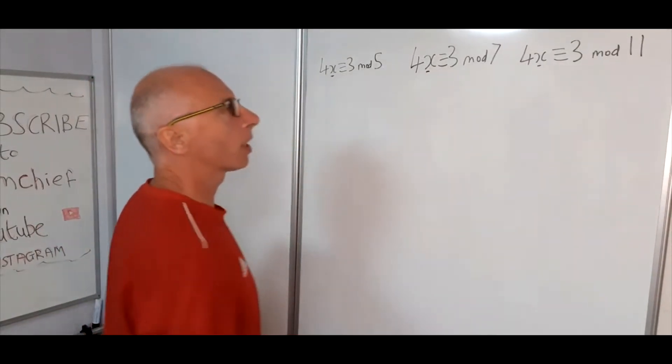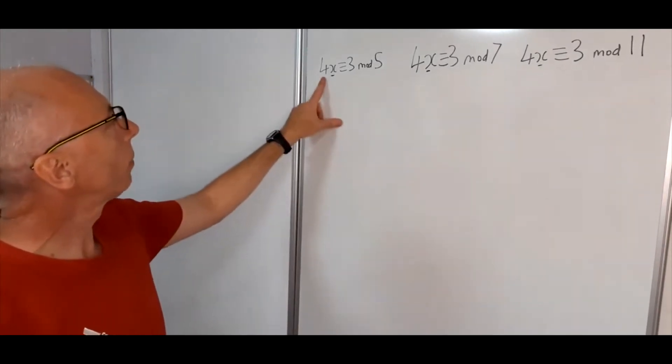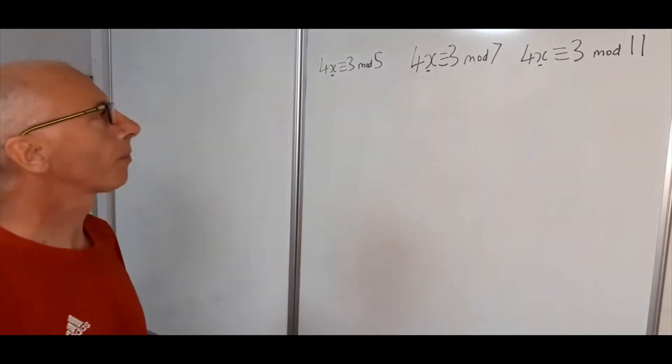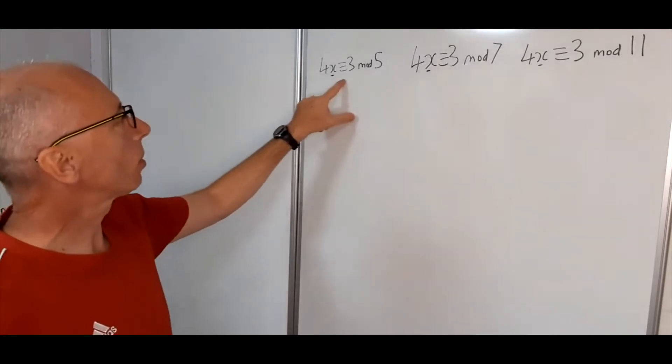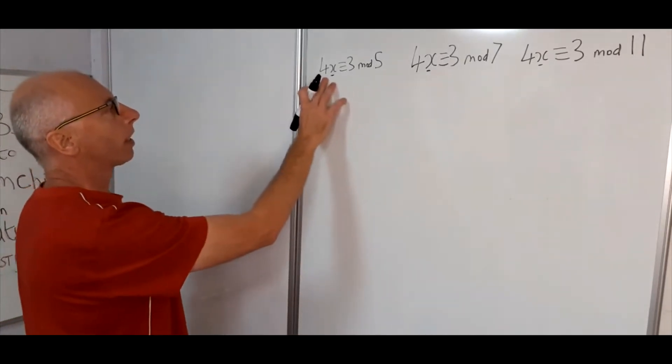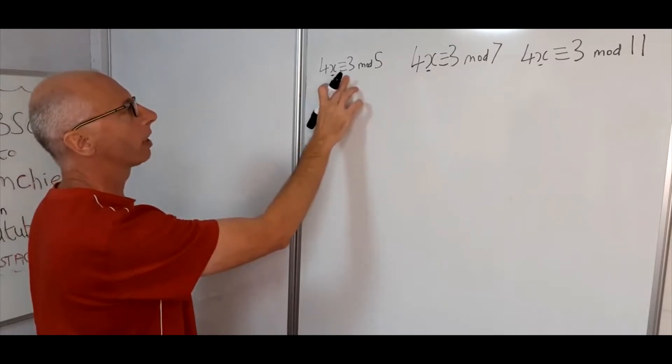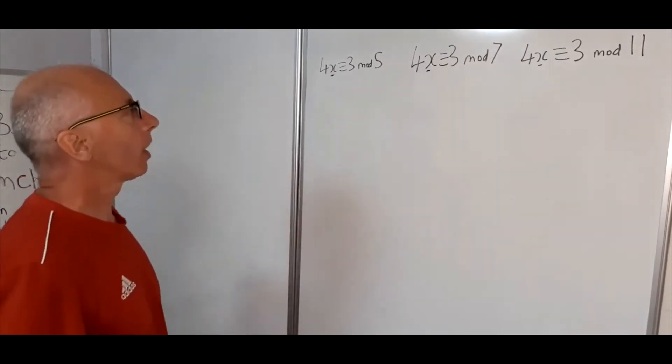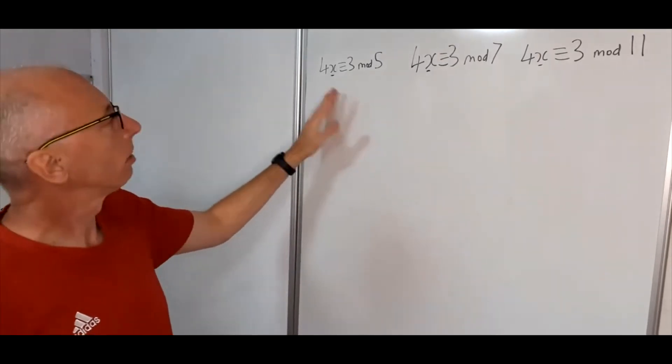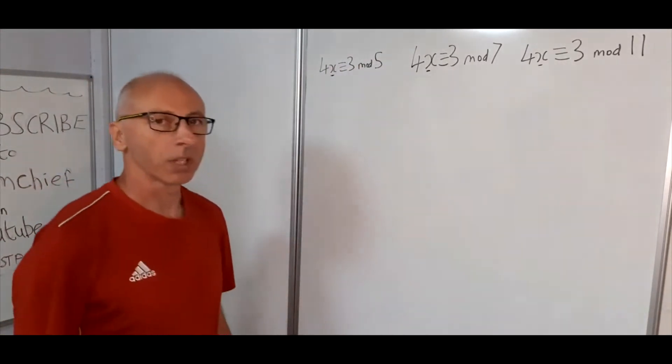Now before we start we've got a slight problem in our normal way of solving these linear congruences. We've got this 4x, what we really need is just to get the x on its own. So basically what we need to do before we start is to solve for x on these individually. So as these numbers are pretty small on all of them, we can just do trial and error. We just keep putting a number for x going from 0 to all the way up to whatever this number is. It won't take us too long I'm sure.